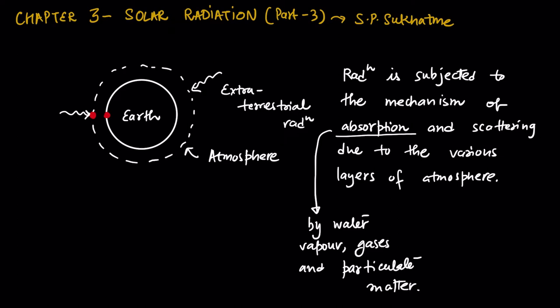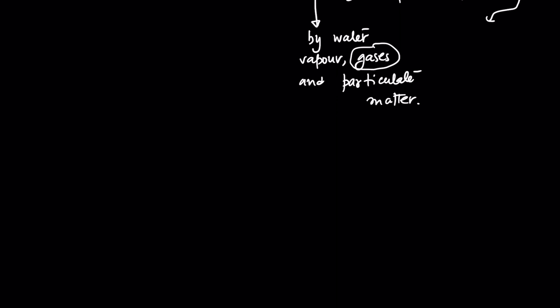That is why we are familiar with the concept of greenhouse gases. Most greenhouse gases absorb solar radiation and increase the temperature, which is why they are called greenhouse gases. Scattering of light takes place due to the various particles in the Earth's atmosphere. When a beam of light hits those particles, the light scatters.